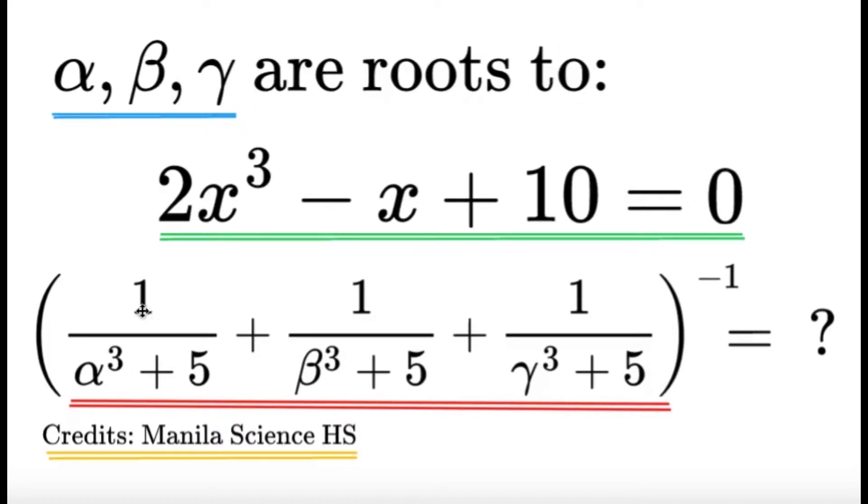Find the reciprocal of 1 over alpha cubed plus 5, plus 1 over beta cubed plus 5, plus 1 over gamma cubed plus 5.